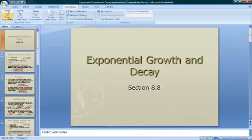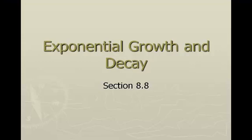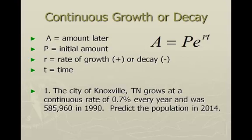In this lesson, we are going to be looking at exponential growth and decay. This is section 8.8 in the Algebra 2 book. There are two formulas we're going to learn for exponential growth and decay, and the first one is A equals P times E to the power of RT. We use this formula when we talk about things growing or decaying continuously — things like bacteria or a biological population growing over time.